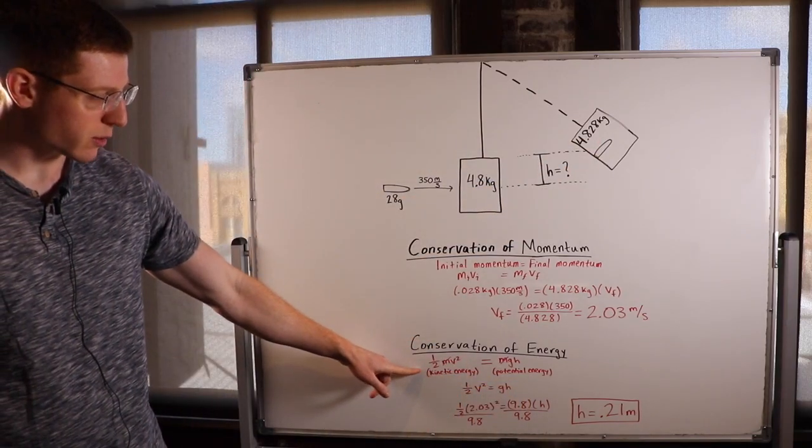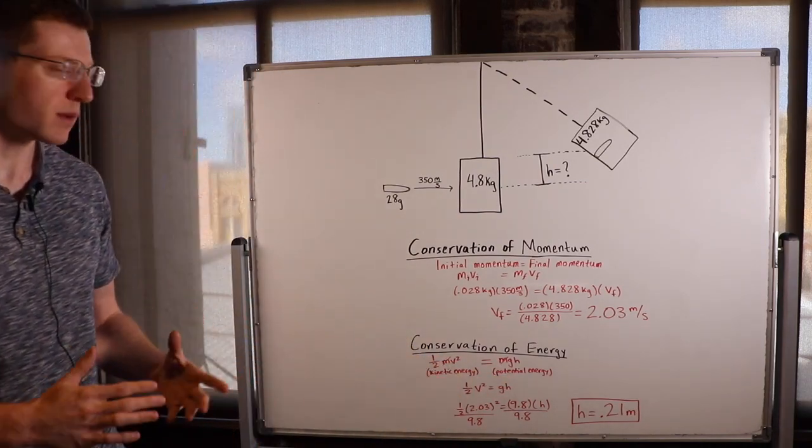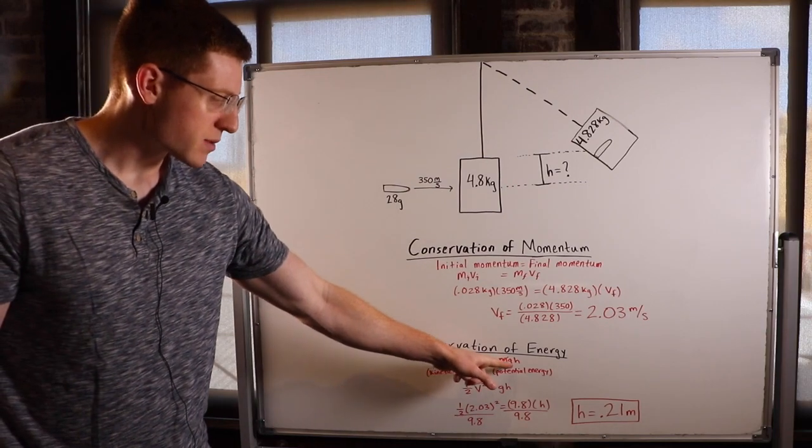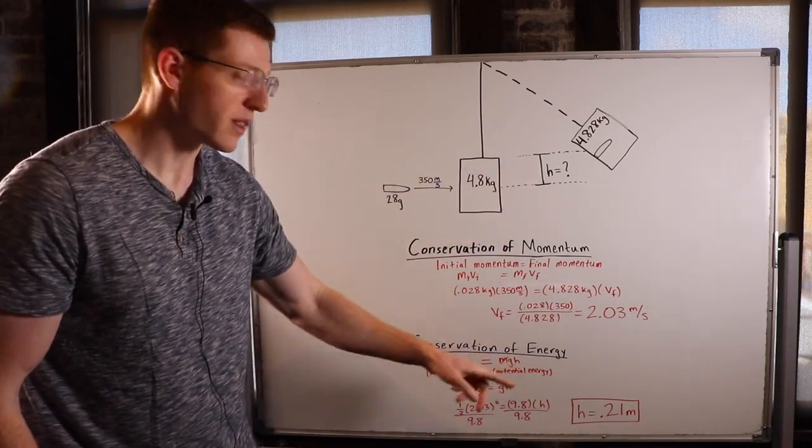And we know kinetic energy is equal to one half mv squared and potential energy is equal to mgh, or mass times the gravitational acceleration times the height that it goes, and we'll solve for that h.